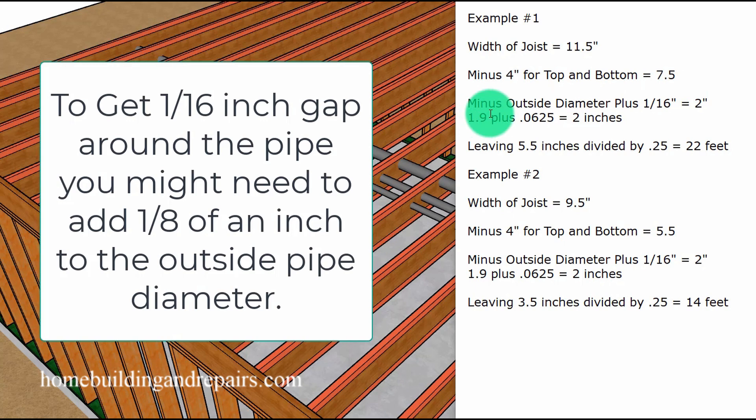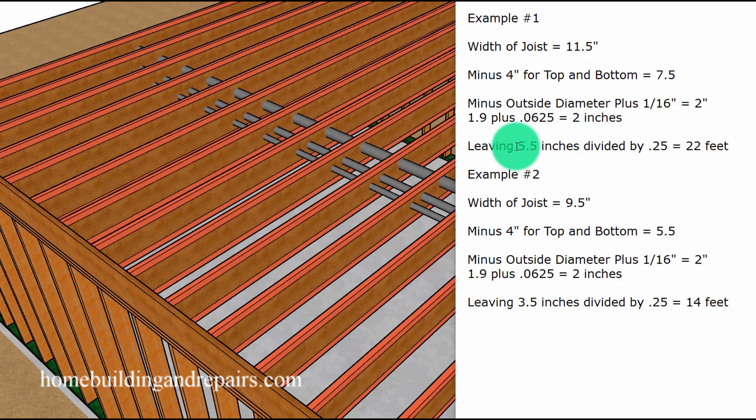Next up, let's subtract the outside diameter plus the sixteenth of an inch. And I just rounded this off to two inches. And if we subtract two inches from seven point five inches, we're going to have five point five inches.